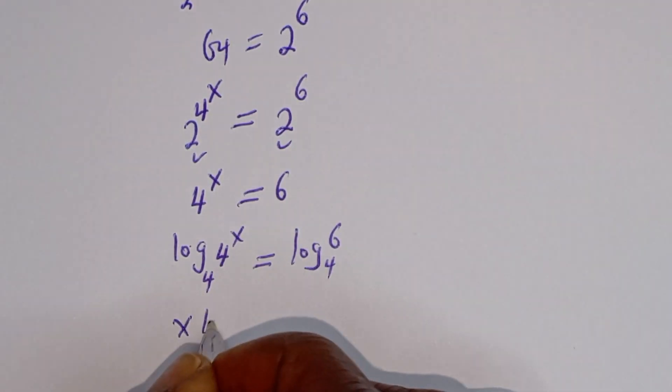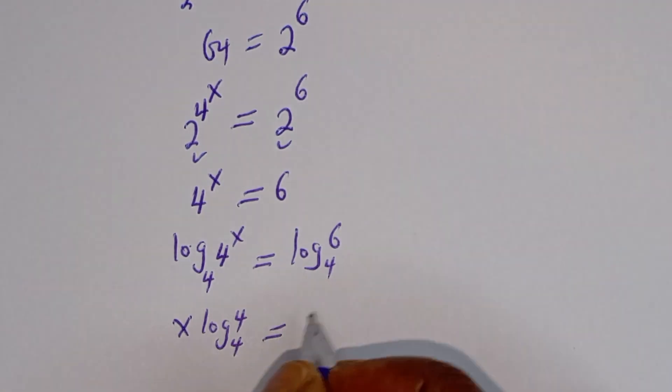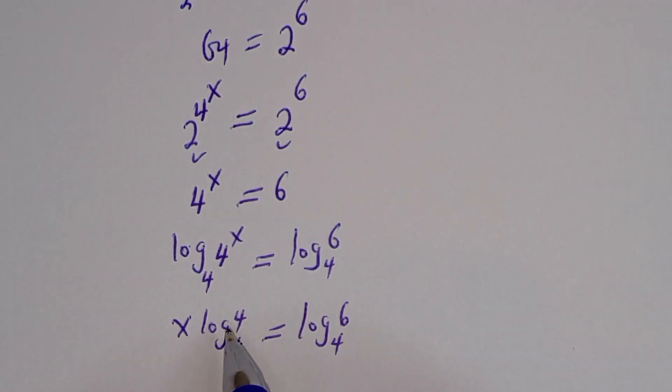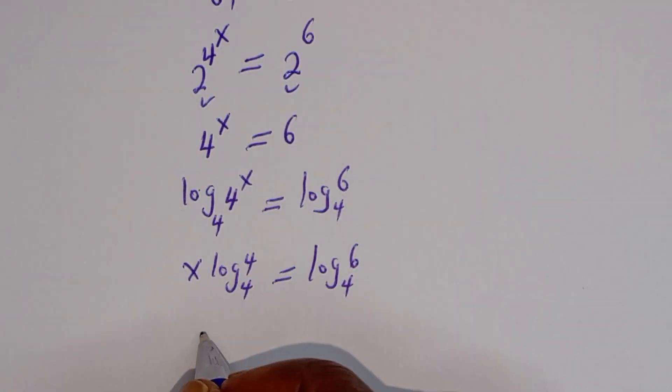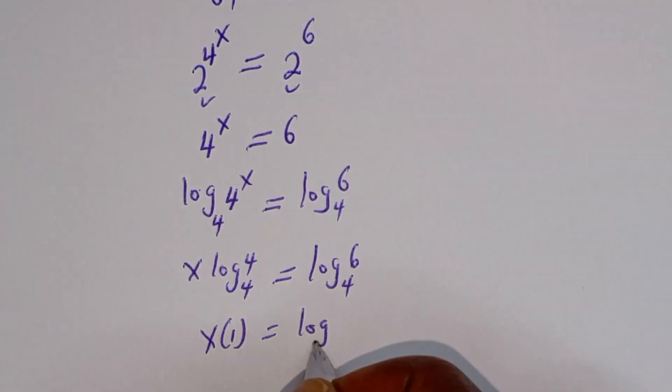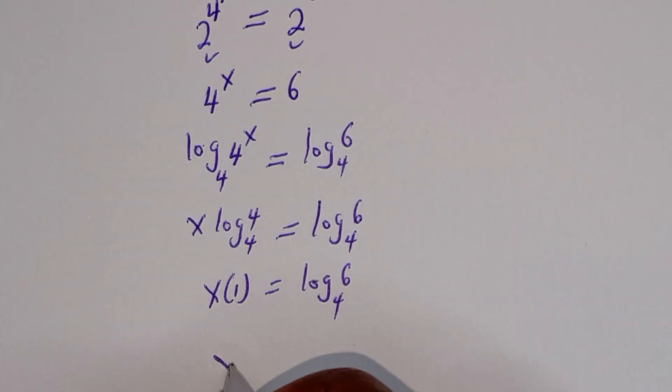Then s log 4 base 4 is equal to log 6 base 4. And log 4 base 4 is 1. We have s multiplied by 1 is equal to log 6 base 4. So, s is equal to log 6 base 4.